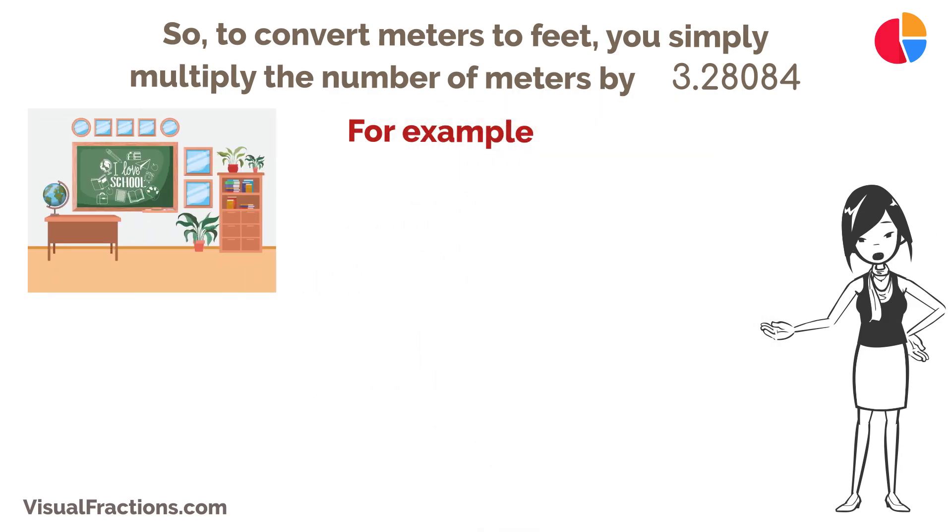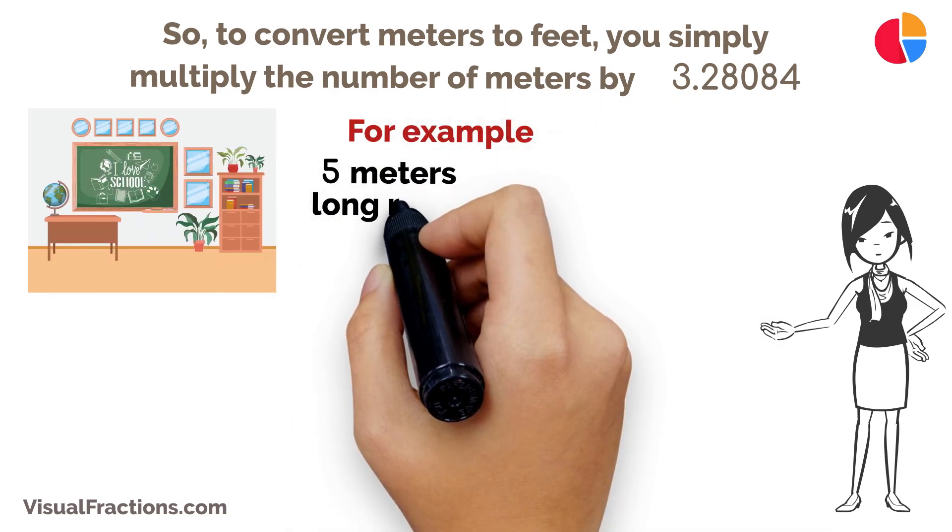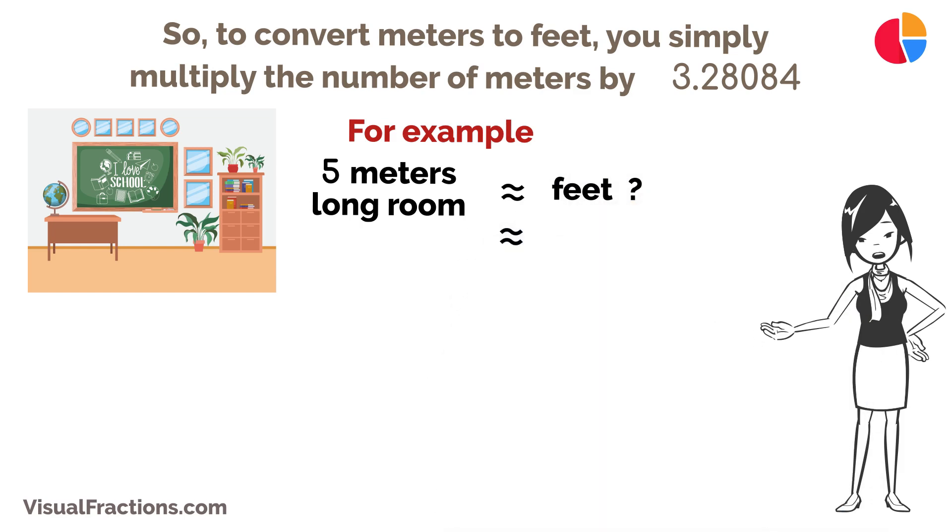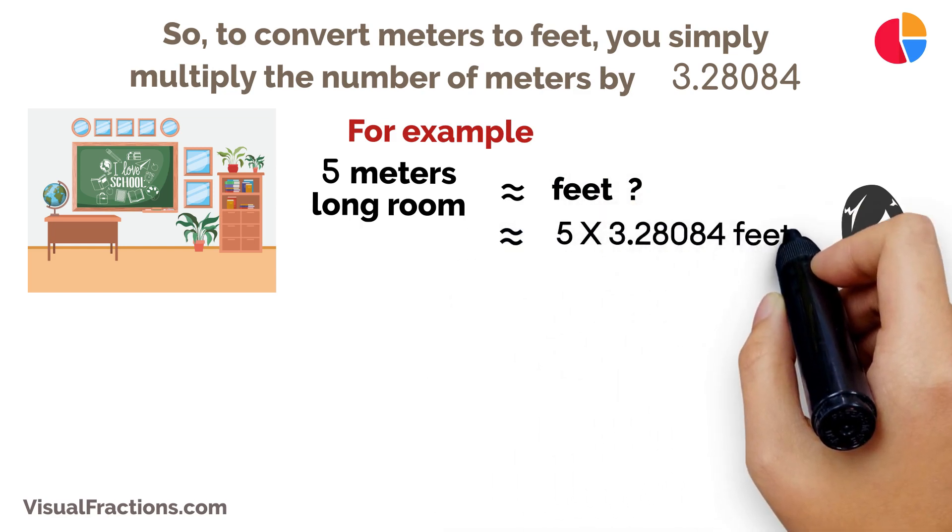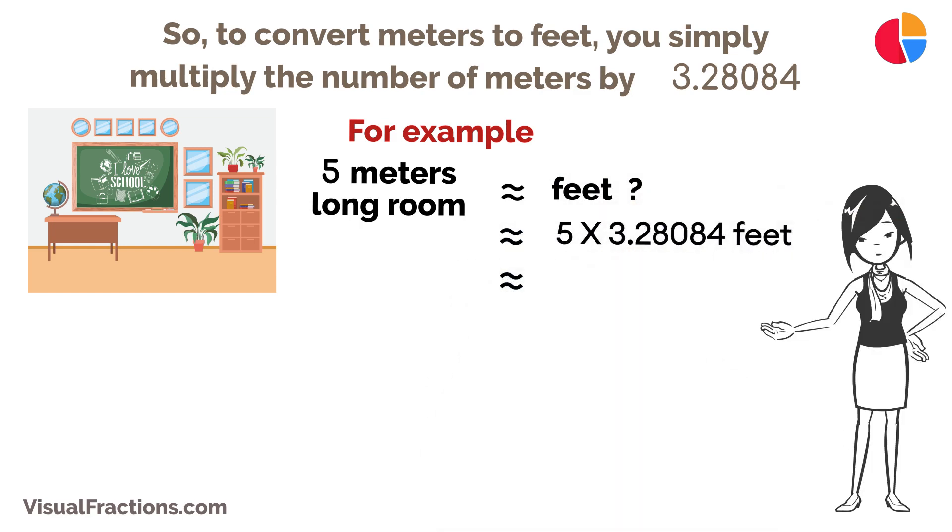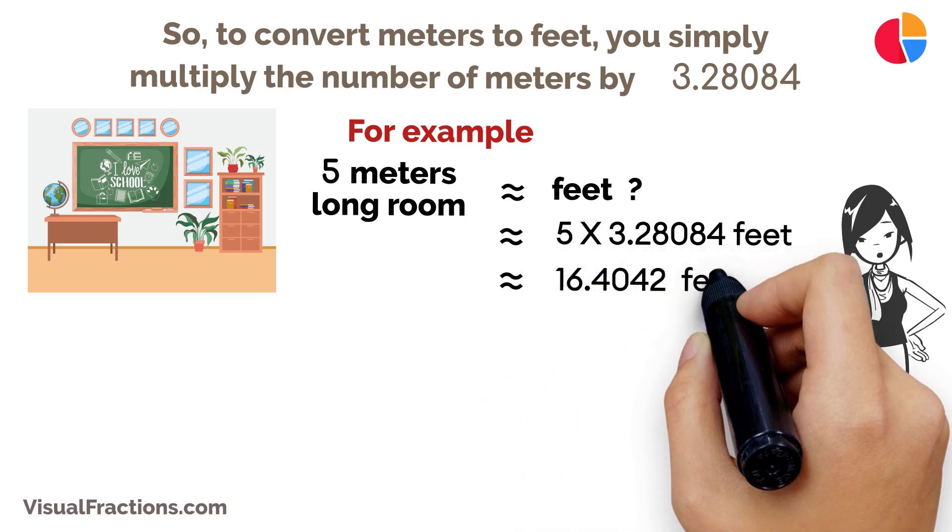For example, if you have a room that's 5 meters long and you want to know its length in feet, just multiply 5 meters by 3.28084. This gives you about 16.4042 feet.